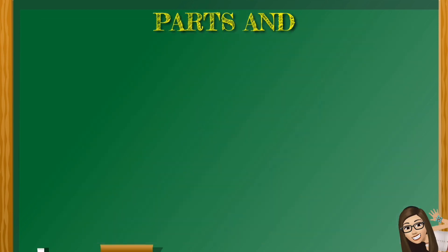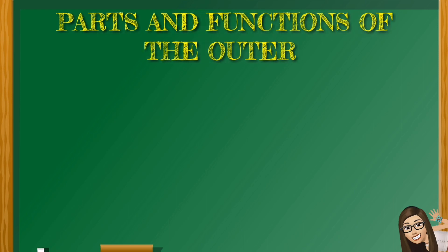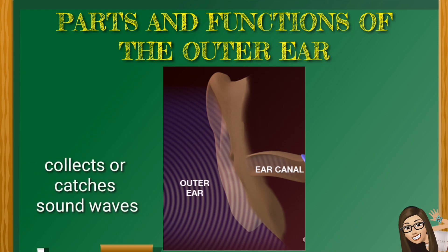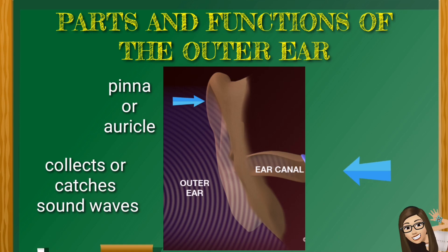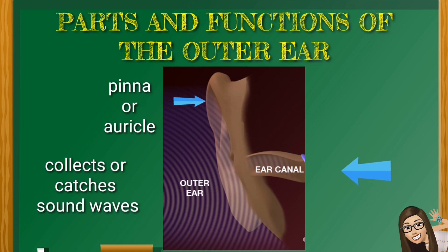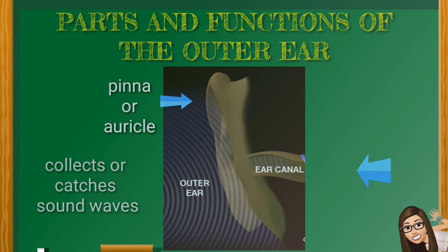Parts and functions of the outer ear: The outer ear collects sound. It includes the pinna and the ear canal. The pinna looks like a funnel that collects or catches sound waves. It is also called the auricle. The ear canal is the passageway of sound waves to the middle ear.